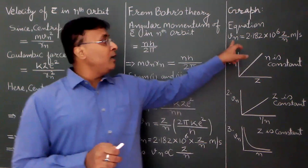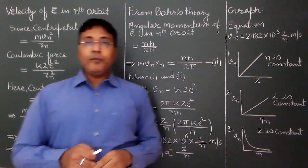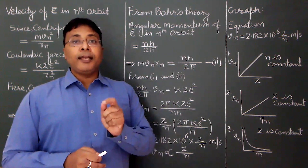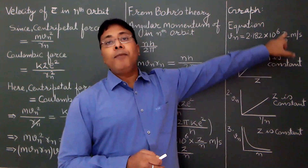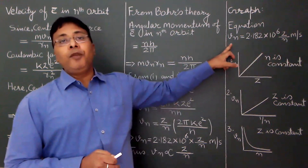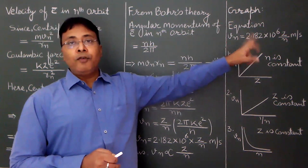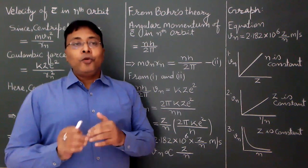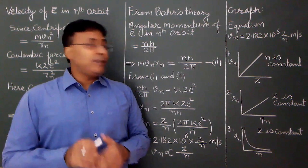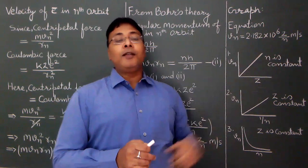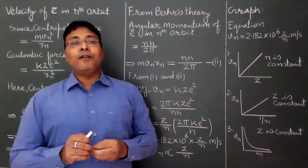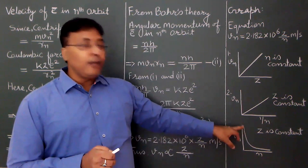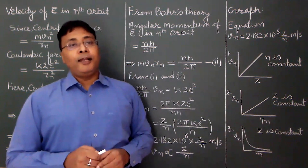For the vn versus n plot, n is on the x-axis and vn is on the y-axis. Then 1/n becomes 1/x, so vn = k/n becomes y = k/x, meaning x·y = constant. When x·y is constant, the shape of the graph is a rectangular hyperbola — the graph goes to infinity on both the y-axis and x-axis.